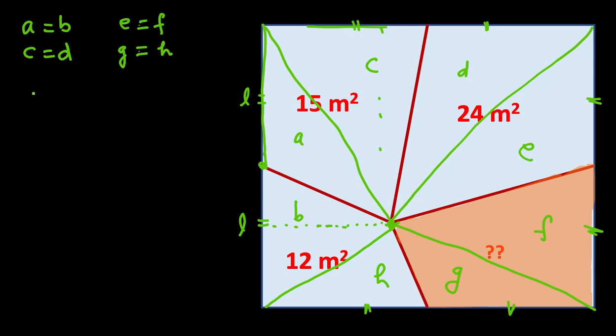So A plus C is equal to 15. D plus E equal to 24. And B plus H is equal to 12. So I have just written whatever is given in the problem. Now we have to find F plus G. F plus G will be this shaded area. This triangle plus this triangle. So how we will find that?